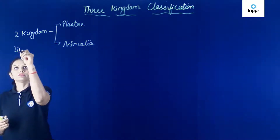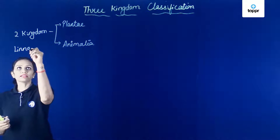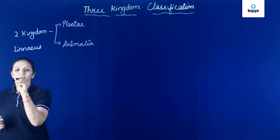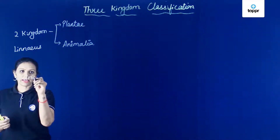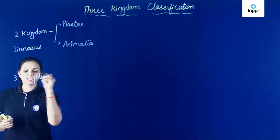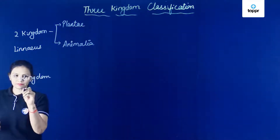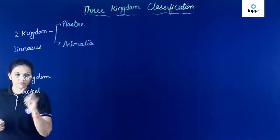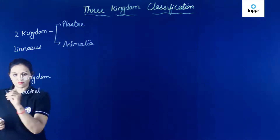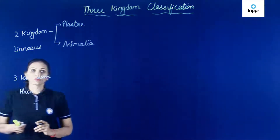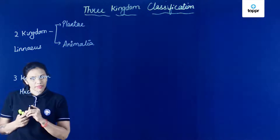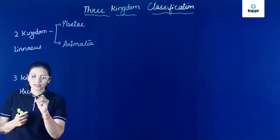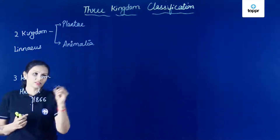Now, the three kingdom classification system was proposed by scientist Ernest Haeckel. This three kingdom classification system was given by Ernest Haeckel in 1866.